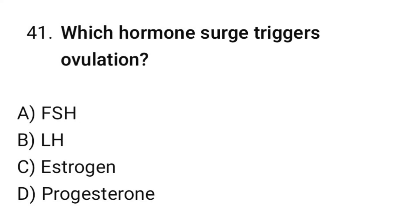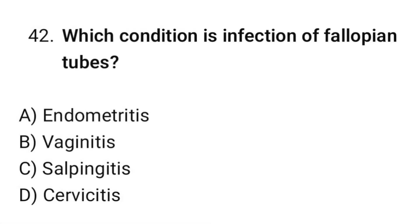Question No. 41: Which hormone surge triggers ovulation? The correct option is B. LH. Question No. 42: Which condition is infection of the fallopian tubes? The correct option is C. Salpingitis.